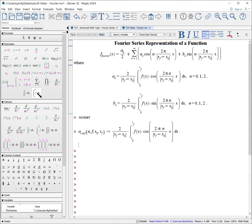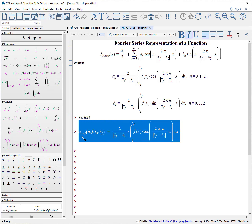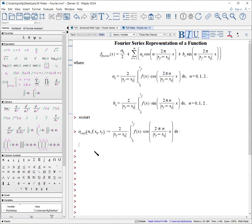To do the b coefficient we'll copy and paste and label it b, and wherever we see cosine we will now put in sine.